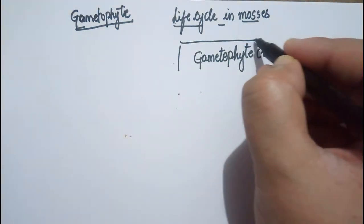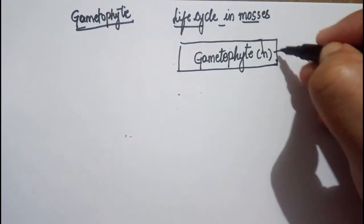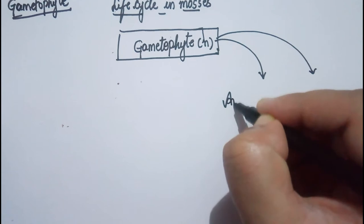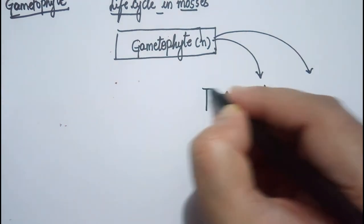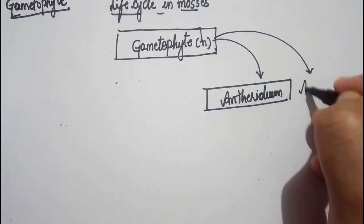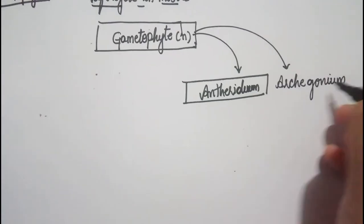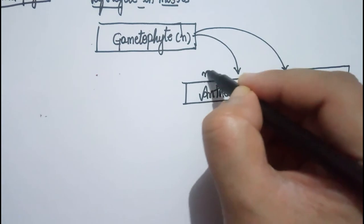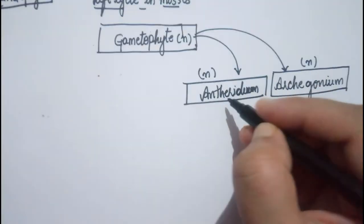On this haploid gametophyte, we have the gamete-producing structures which are called the antheridia and the archegonia. The male gamete-producing structure is called the antheridium and the female gamete-producing structure is called the archegonium. Their ploidy is n, because they are on the gametophyte which is a haploid structure.